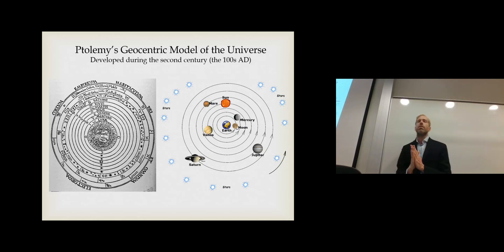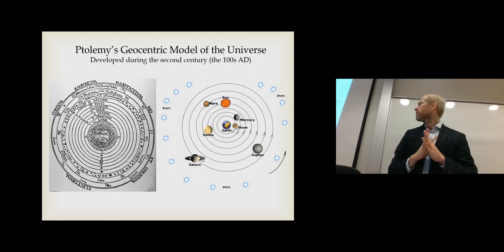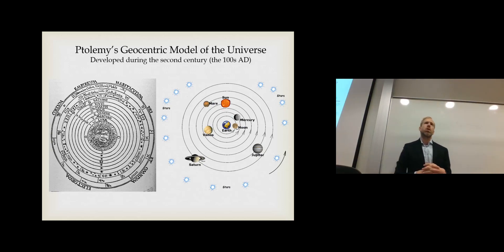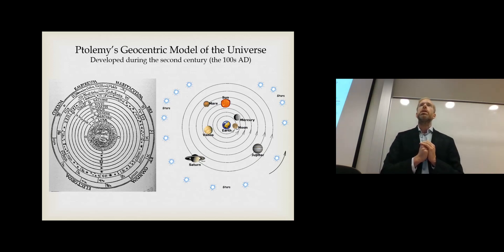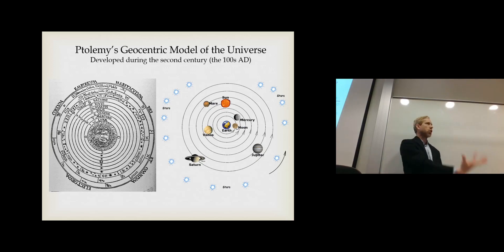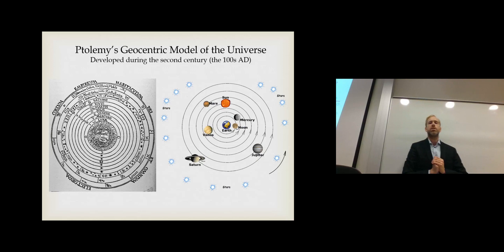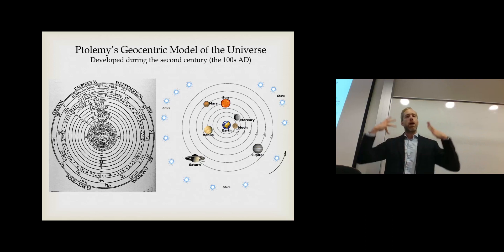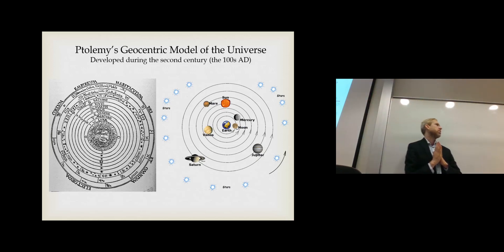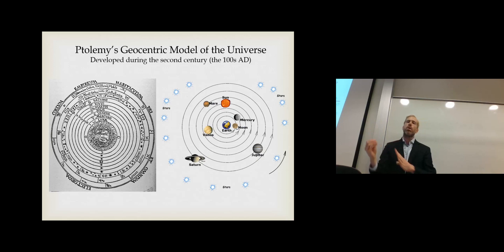The other thing about the geocentric model is that it works on the basis that we are the center of existence — or at least that our existence is of central importance to the cosmos. This meshes with the Judeo-Christian framework, which holds that the universe is centrally concerned with human existence, and adheres to the ideals of Christianity where Jesus is the embodiment of God on the surface of the earth. Of course, we now know the earth is not the center of the universe — there really is no center; it's just this vast space with no actual central point.